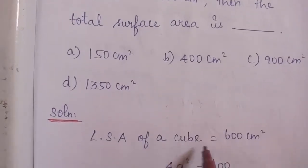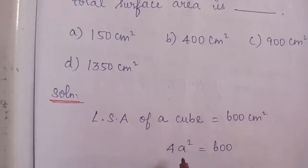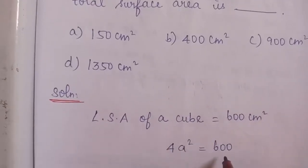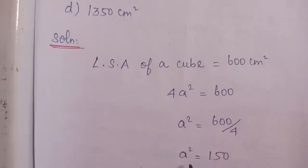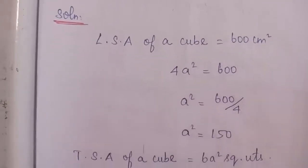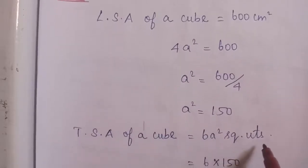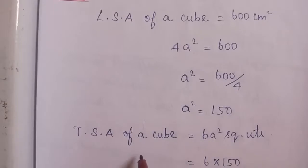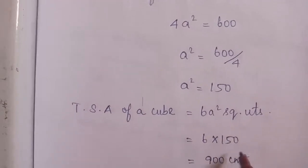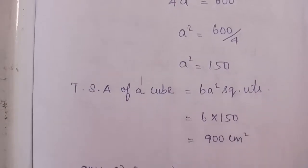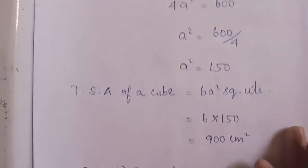Solution: Lateral surface area of a cube is given as 600 cm square. So 4A square equals 600, A square equals 150. Total surface area of a cube is 6A square (including top and bottom), which equals 6 into 150, equal to 900 cm square. The correct answer is Option C: 900 cm square.